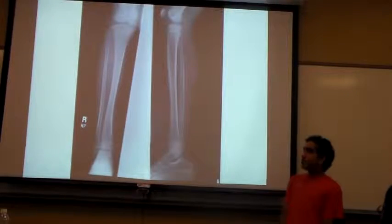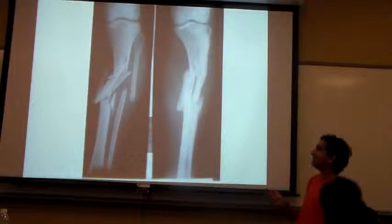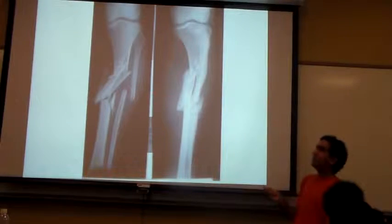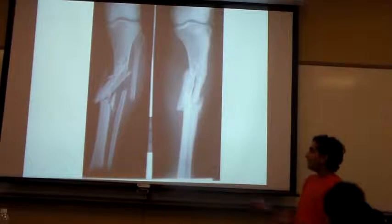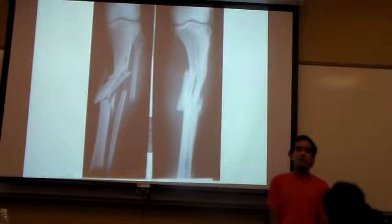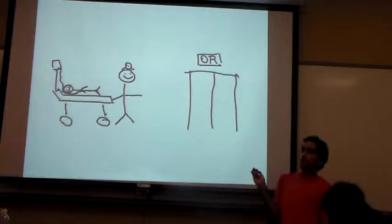And then we come to the comminuted fracture, which is very, very, very bad. That's what Bob has, unfortunately, but it's nothing that we can't solve with a bit of surgery. We're not going to get away with just a cast. So we rush him off to the OR.